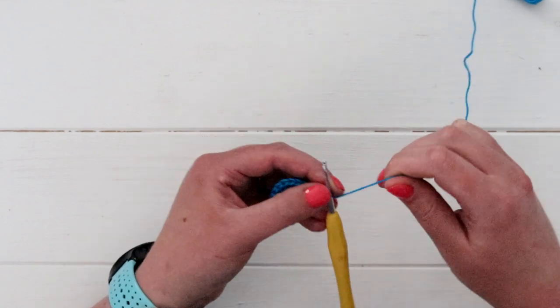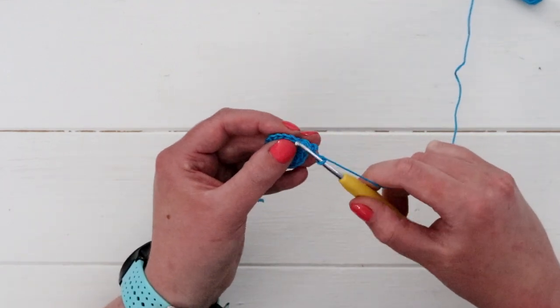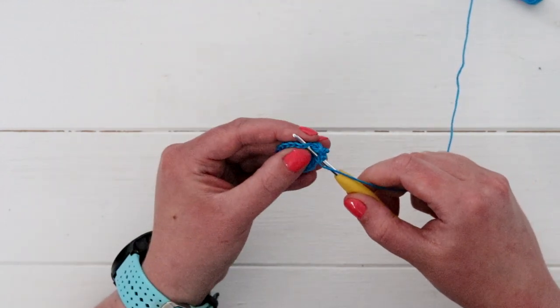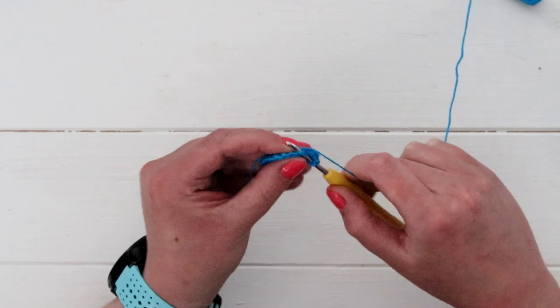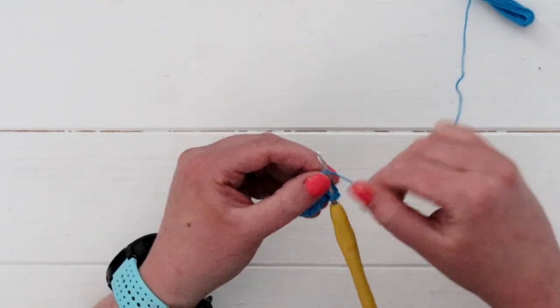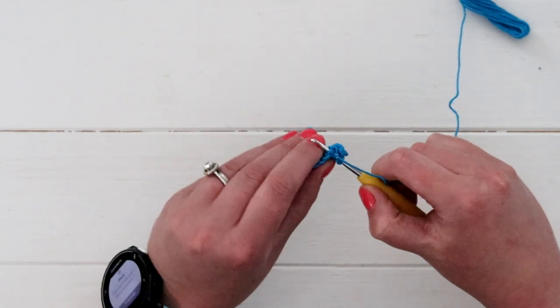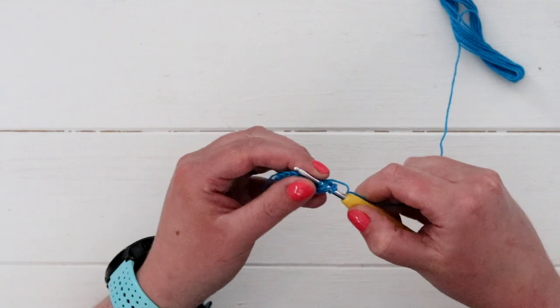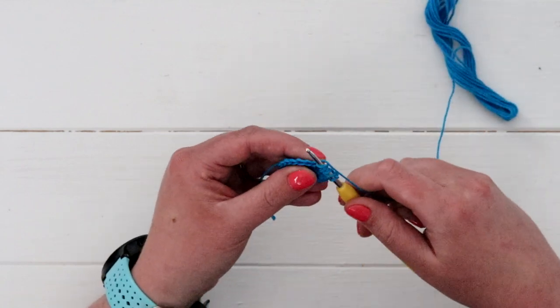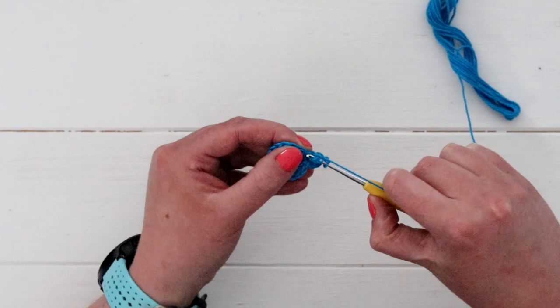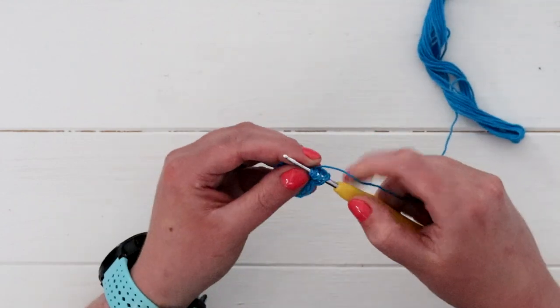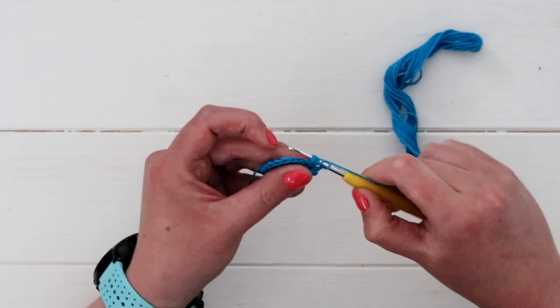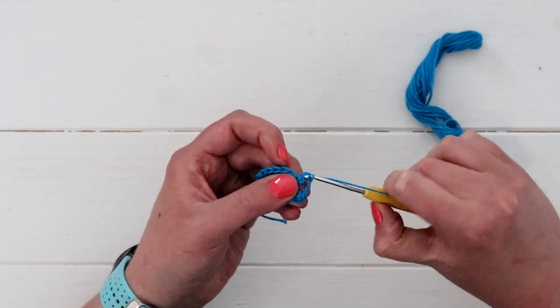Okay, so I'll show you the puff stitch again. We will yarn over, put the hook into the top of the stitch from the previous round, yarn over, pull through, that's three loops, yarn over, put your hook in, yarn over, and pull through. And then you'll yarn over again, put your hook in, yarn over, pull through, and that's our two, four, six, seven loops on our hook. So yarn over one last time, and then pull it all through.